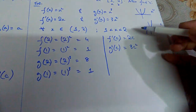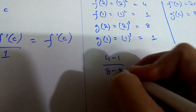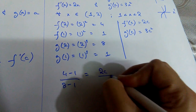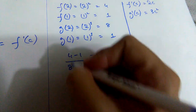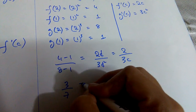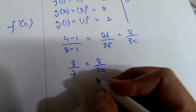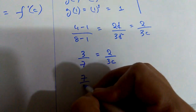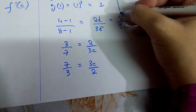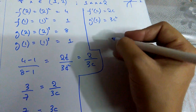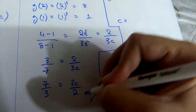Now we substitute these values into the Cauchy's equation: [f(b) − f(a)] / [g(b) − g(a)] = f'(c) / g'(c). The left side becomes [4 − 1] / [8 − 1] = 3/7. The right side is 2c / 3c², which simplifies to 2 / 3c. Setting 3/7 equal to 2/3c and cross-multiplying gives c = 14/9.